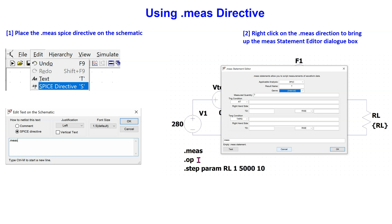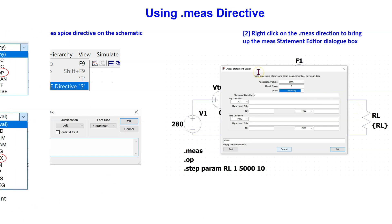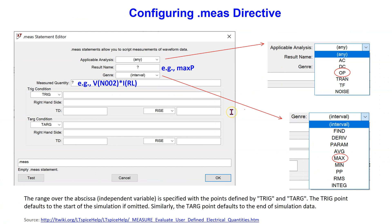Right-click on it and this will bring up the Measure Statement Editor dialog box. We can configure the measure directive as follows. In Applicable Analysis, we select the type of simulation we are running — in our case we select OP, which is DC operating point. In the result name, we specify the name of the variable for saving the output of the measure directive — in our case we can use MAXP, which is short for maximum power transfer. In genre, we select the type of measurement operation to perform — in this case we will select the MAX function.